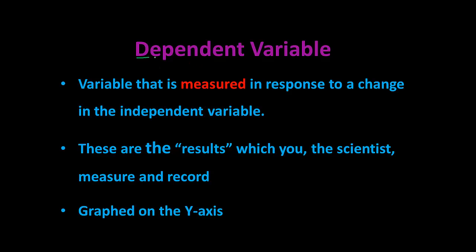The dependent variable is the variable that is usually measured in response to a change caused by the independent variable. The dependent variable depends on the independent variable. It represents the results that you measure and record, and it is graphed on the y-axis.